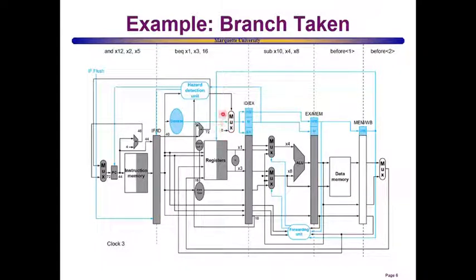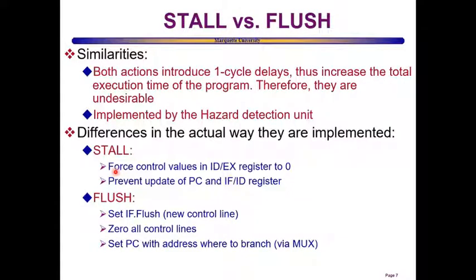The hazard detection unit also sets control signals to zero and controls the multiplexer so the program counter is updated with the address to which we need to jump and fetch instructions from that branching address. In summary, both stalling and flushing introduce cycle delays, which increases the total execution time of the program — so these situations are undesirable.